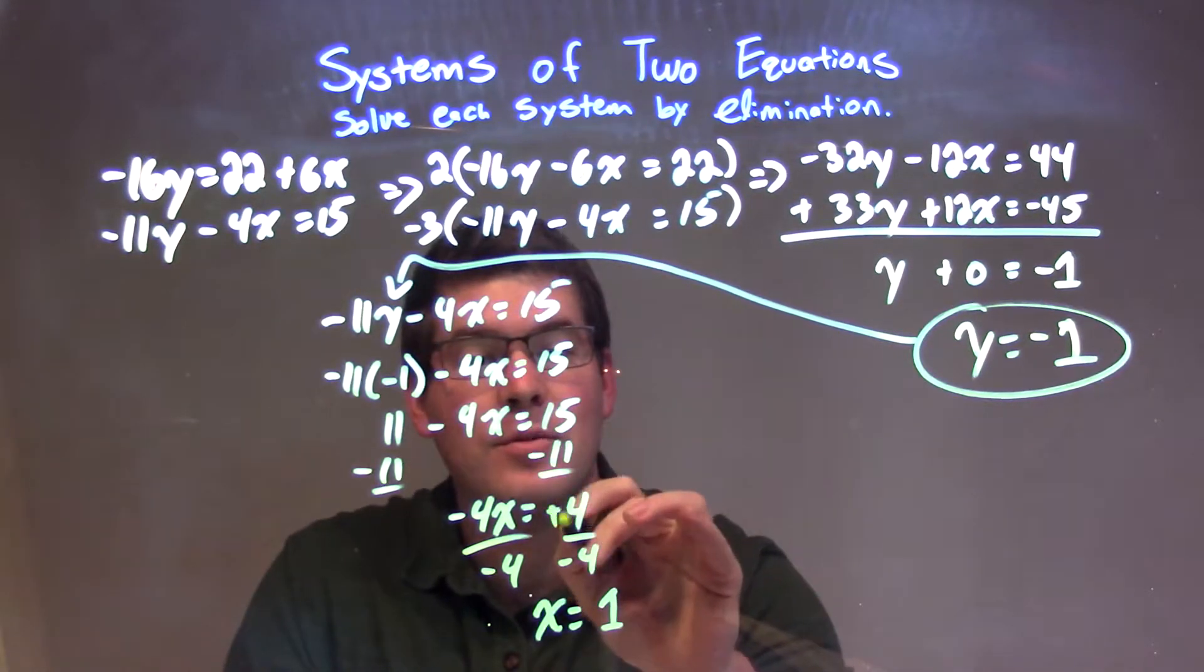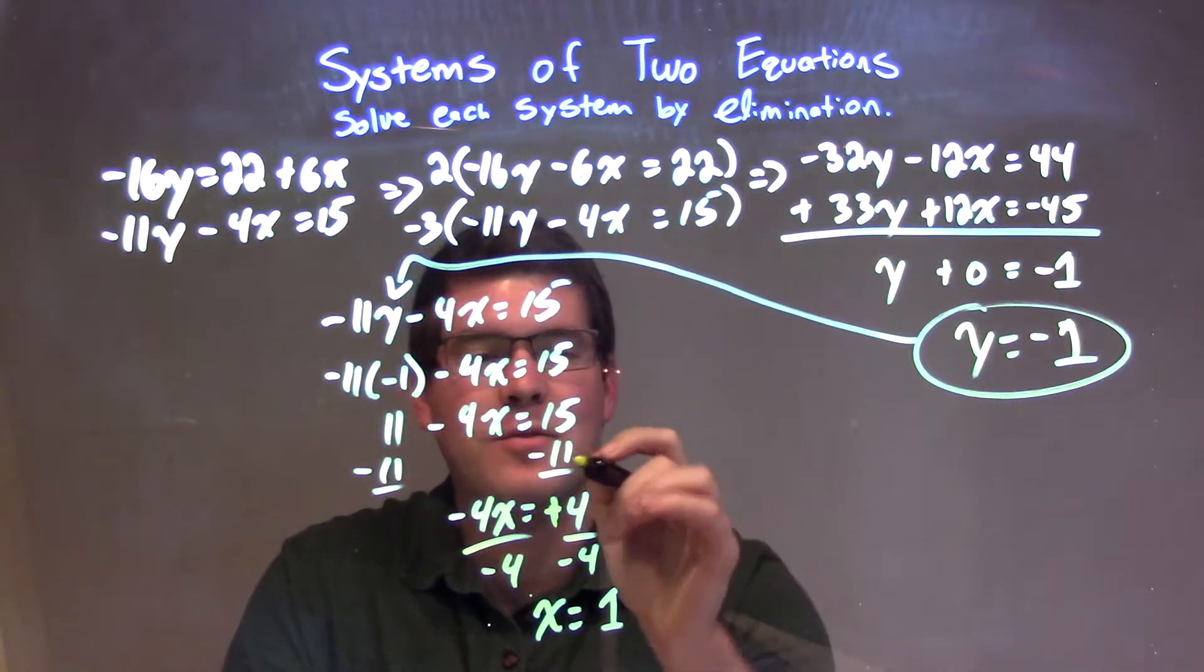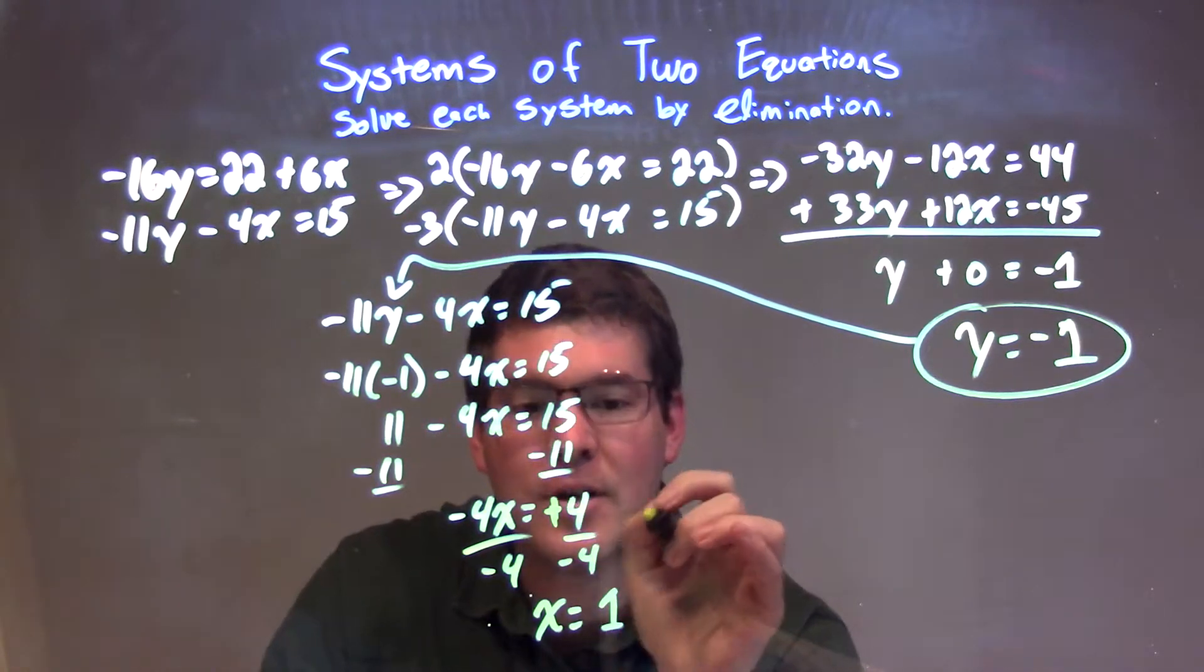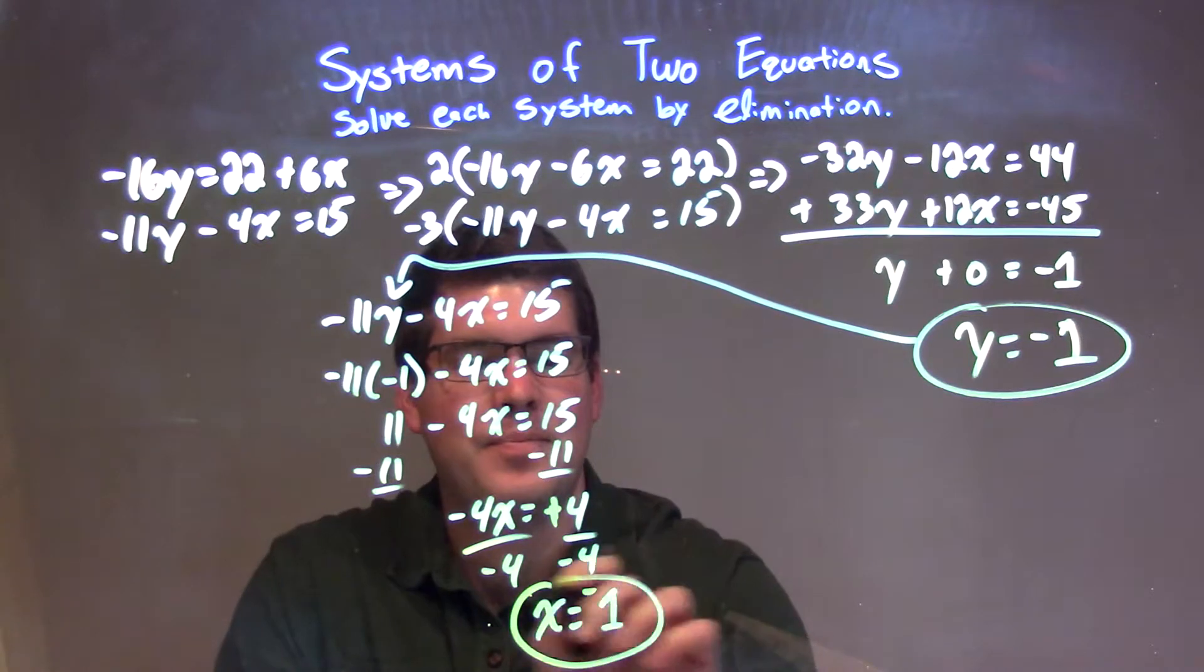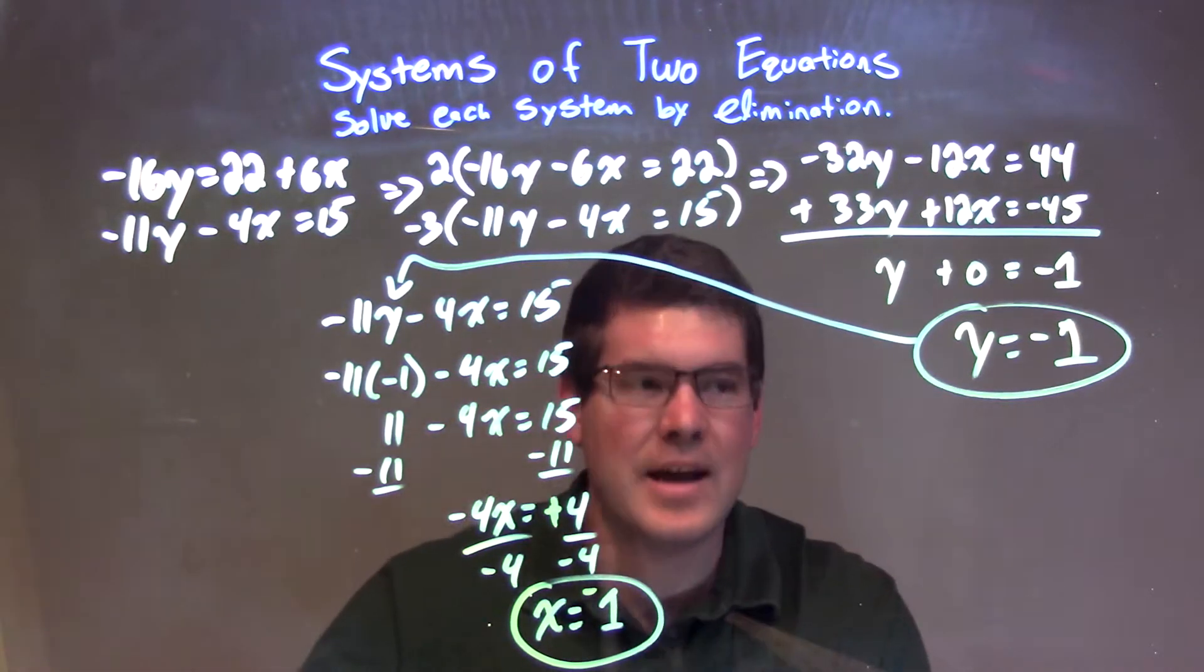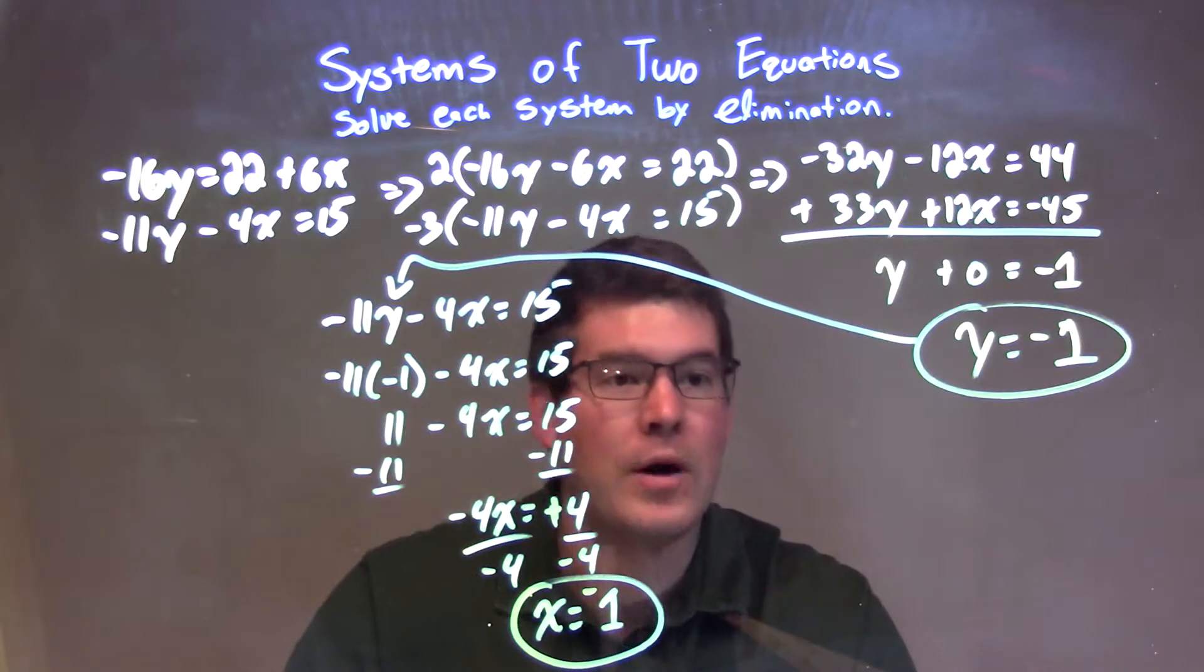From there, I divide by negative 4 on both sides. Sorry, this is a positive 4. Whoops. 15 minus 11 is a positive 4. Then we divide by negative 4, giving me x equals negative 1. So we have x is negative 1, y is negative 1 as well.